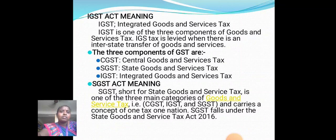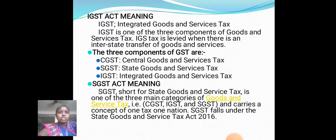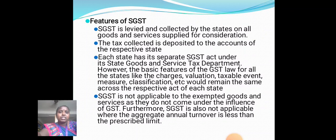The three components of GST are: CGST (Central Goods and Service Tax), SGST (State Goods and Service Tax), and IGST (Integrated Goods and Service Tax). SGST, or State Goods and Service Tax, is one of the three main categories of Goods and Services Tax, and carries the concept of one tax, one nation. SGST falls under the State Goods and Service Tax Act 2016. SGST is levied and collected by the states on all goods and services supplied for consideration.